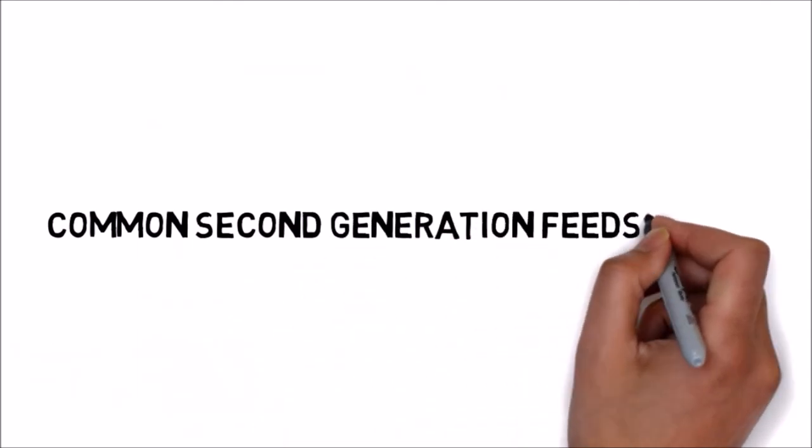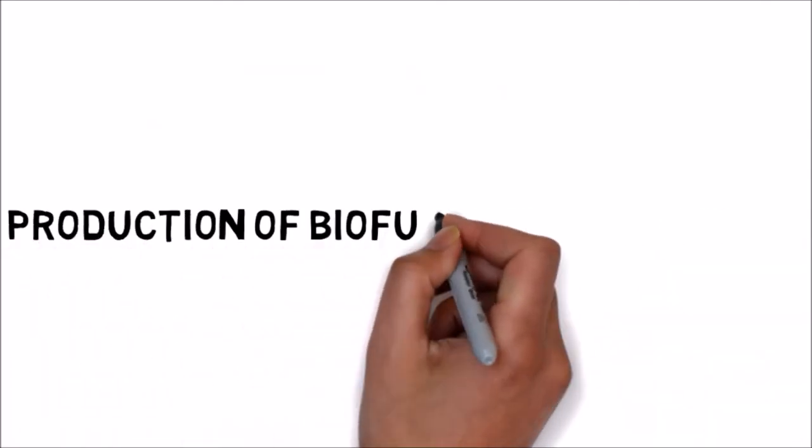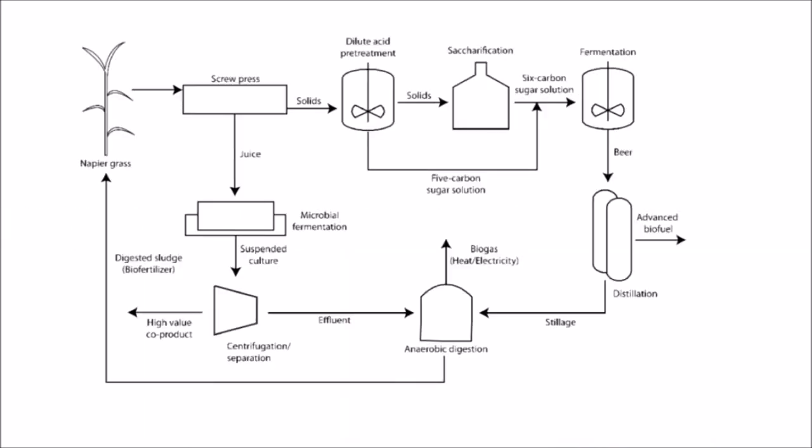Common second generation feedstock. Production of biofuels using grasses. Various grasses like switchgrass, miscanthus, indiangrass, and others have on the other hand been put in the spotlight. The specific grass picked by and large relies on upon the area as some are more appropriate to specific atmospheres. In the United States, switchgrass is favored. In Southeast Asia, miscanthus is the decision.